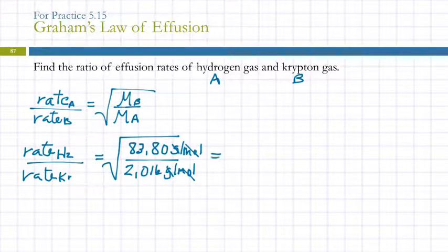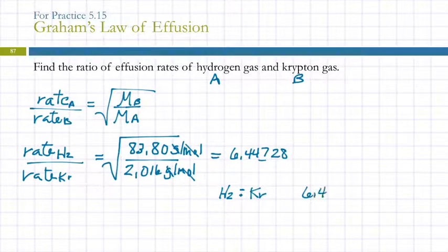I've got the square root of 83.8 divided by 2.016. How many sig figs? Four. Six point four four seven. What are the units? Nothing - no units, it's a ratio. The ratio of hydrogen to krypton would be 6.447 to 1.